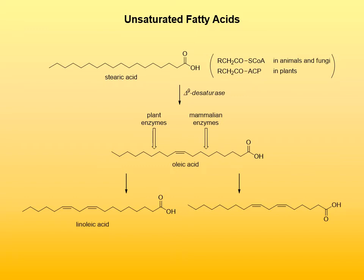Since delta-9 desaturase is involved, the initially produced monounsaturated fatty acid is a delta-9 unsaturated fatty acid. For example, dehydrogenation of stearic acid upon action of delta-9 desaturase gives oleic acid as a product. If an additional double bond is to be introduced, the second double bond can be introduced towards the methyl terminus or towards the carboxyl end of the chain. Mammalian enzymes introduce the second double bond towards the carboxyl end, while plant enzymes introduce it towards the methyl end. This means that simply by the structure of the fatty acid we can determine whether its origin is plant or animal tissue.